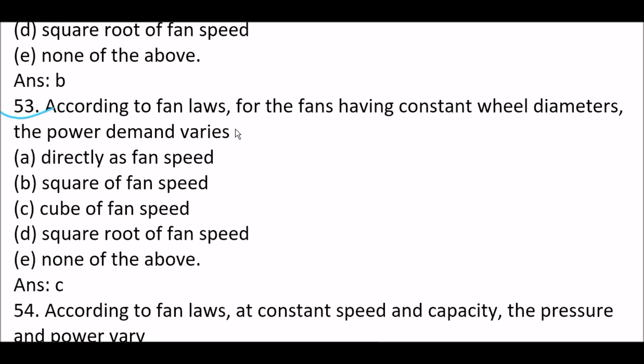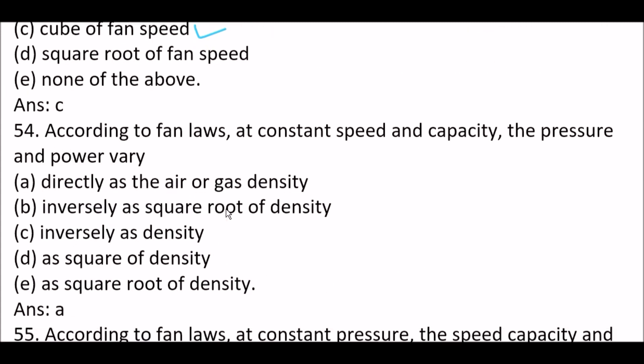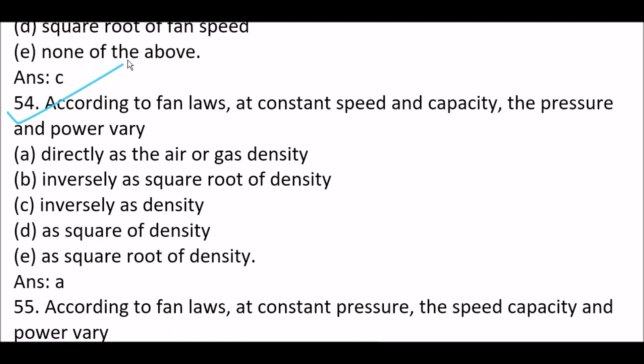Next question. According to fan laws, for the fans having constant wheel diameter, the power demand varies option C, cube of fan speed. Next question. According to fan laws, at constant speed and capacity, the pressure and power vary directly as the air or gas density, option A.